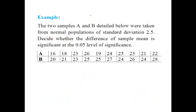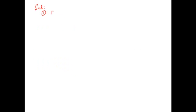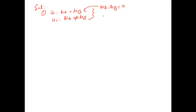Let us look at another example. We have two samples, sample A and sample B. The standard deviation of both samples is 2.5 — both have the same standard deviation. We have to test whether the difference of sample means is significant at the 0.05 level of significance. In the first step, the null hypothesis is: mean of sample A equals mean of sample B, and the alternative is mean of sample A is not equal to mean of sample B. This is again a two-tail test.